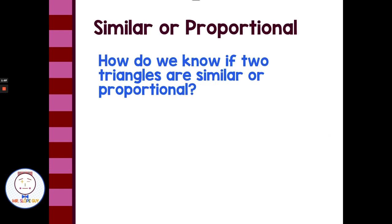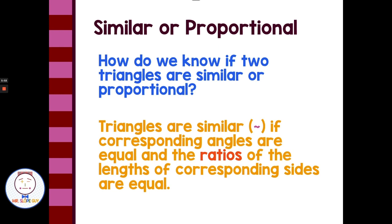So how do we know if two triangles are similar or proportional? We're looking for corresponding angles that are equal and ratios that are equal — the same scale factor or the same ratio. All the interior angles would be equal to each other. To determine if something is similar or proportional, we check the sides to see if we have that same scale factor, that same ratio of all the corresponding sides.